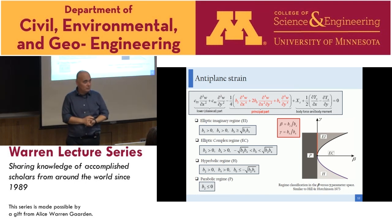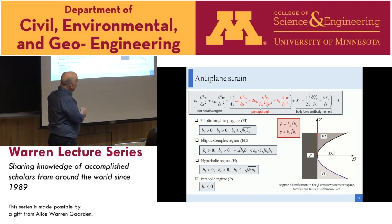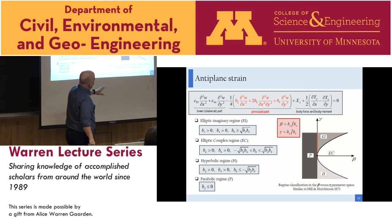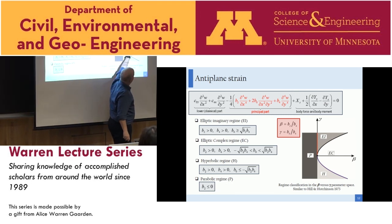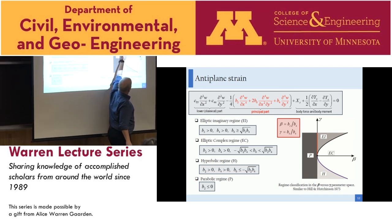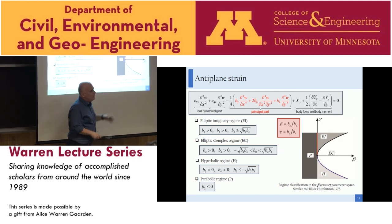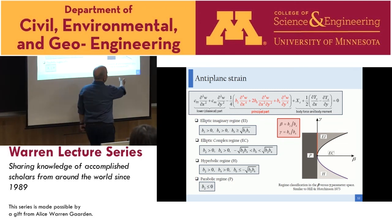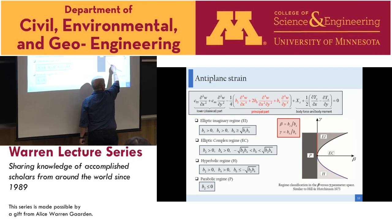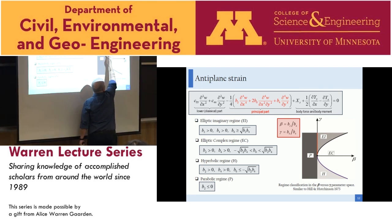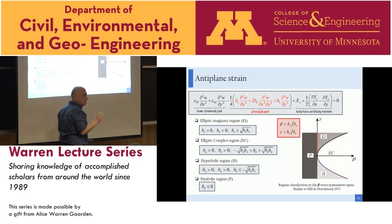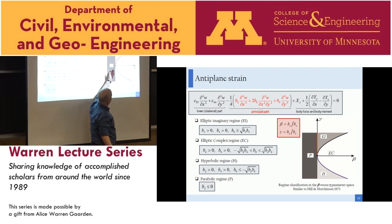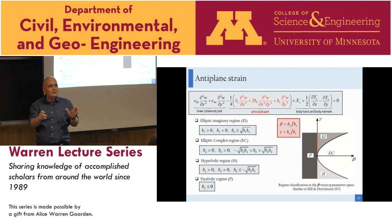The material can be in the elliptic complex range, the hyperbolic range, the elliptic imaginary, or the parabolic regime. An extreme material is one that is still in the elliptic range but very close to the boundary — close to the hyperbolic boundary or close to the parabolic boundary. That's the idea: a material staying near the boundary of the problem zone.